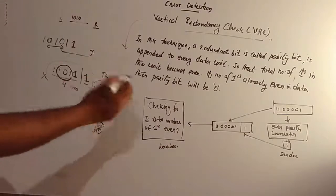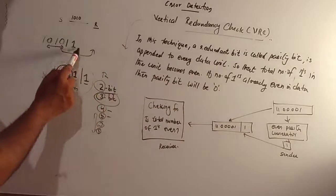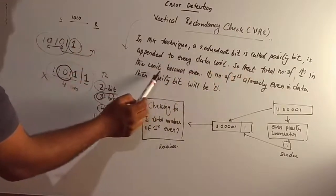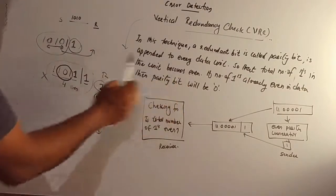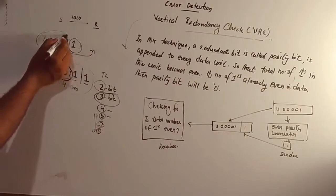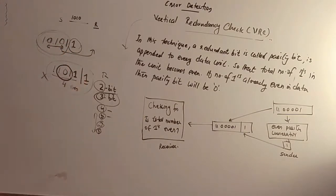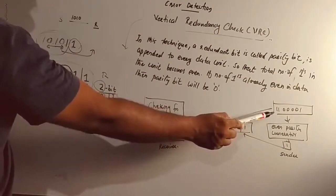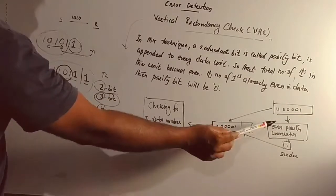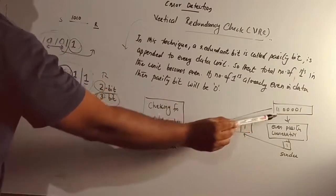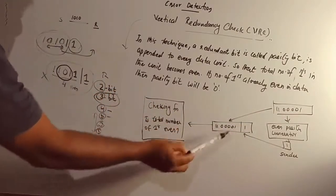In this technique, a redundant bit called a parity bit is appended to every data unit, so that the total number of 1s in the unit becomes even. If the number of 1s is already even, the parity bit will be zero. This is the original message given to the parity bit. If we check the number of 1s, we will confirm the number of 1s.